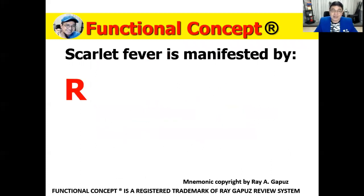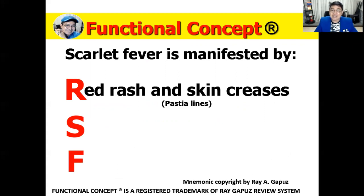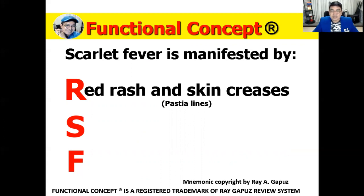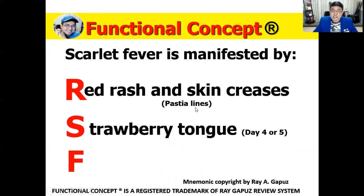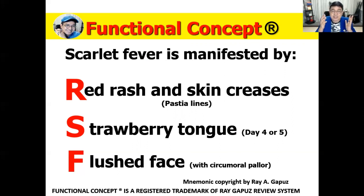Scarlet fever is manifested by — remember the code RSF. R: presence of red rash and red skin creases, or what we know as Pastia's lines. The rash can start from the face, moving to the trunk, then the arms and the legs. Certain areas like creases on the neck, elbows, and knees become inflamed and red, with lines becoming more defined — those lines are called Pastia's lines. S: strawberry tongue occurs on day four and five, when the tongue covered with white patches eventually peels off, revealing a shiny, strawberry-like appearance.